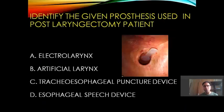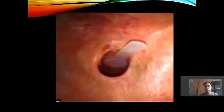The first question was: identify the given prosthesis used in a post-laryngectomy patient. They have shown you a device in the image and the choices are electro larynx, artificial larynx, tracheoesophageal puncture device, or esophageal speech device. Let us see what we have seen in the image.